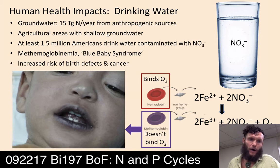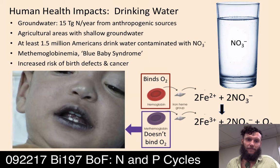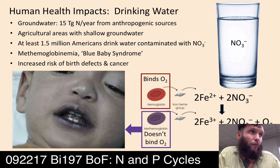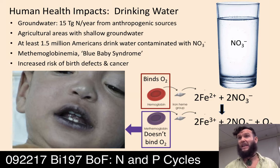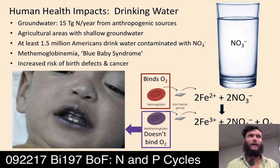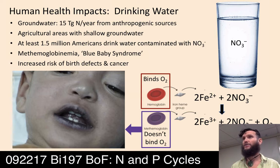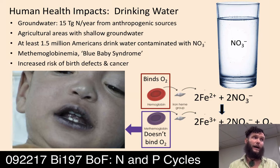Why is this a problem? It leads to methemoglobinemia — otherwise known as blue baby syndrome. Normally, red blood cells are full of hemoglobin. Iron binds oxygen and transports it from your lungs to the tissues in your body — that's what breathing is for, getting oxygen to the lungs so it can exchange into the blood and be carried by the iron in our hemoglobin.